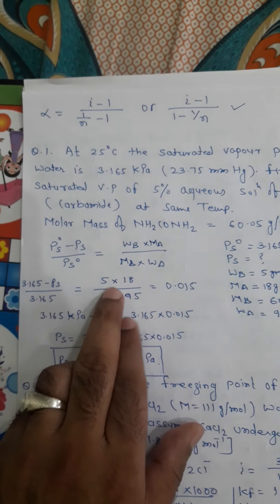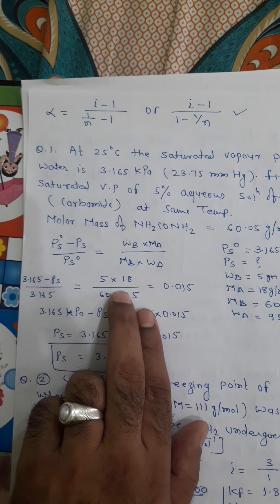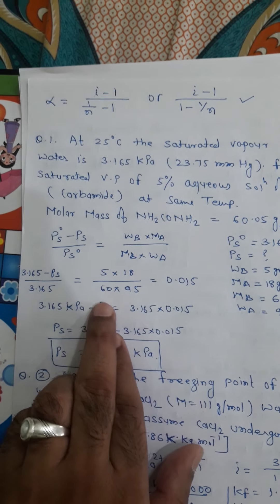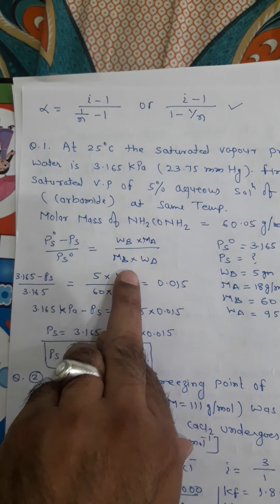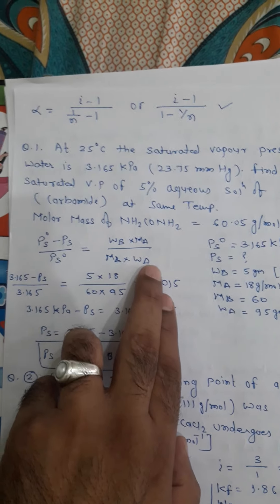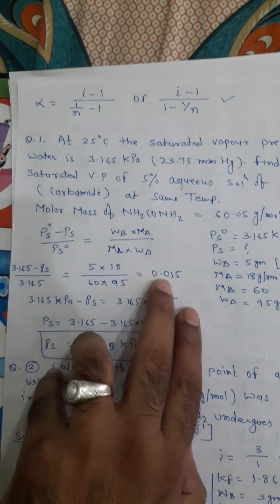In 5 percent aqueous solution, 5 gram is the non-volatile solute, then 95 gram is the water. When we put all those values in given formula, 3.165 minus PS upon 3.165, it is kilopascal. PS, vapor pressure of the solute, which we have to find out. WB is 5, MA, the mass of the solvent, molecular mass of the solvent 18, 60 is the molar mass of the solute, that means urea 60 and 95, mass of the solvent 95 gram. When we solve all those things, we will get 0.015.